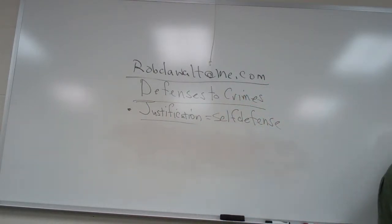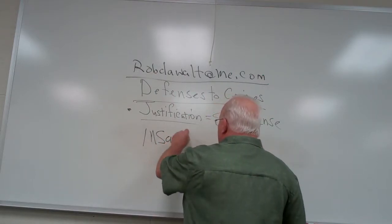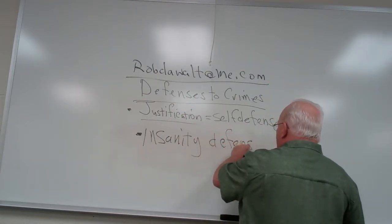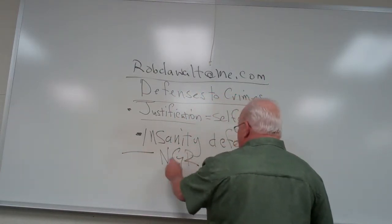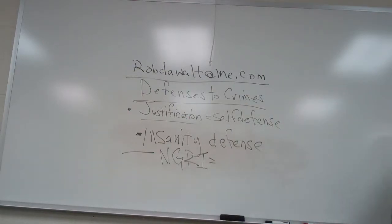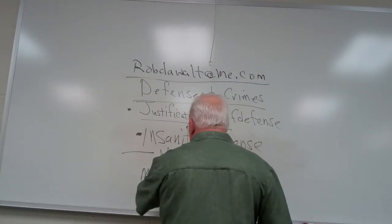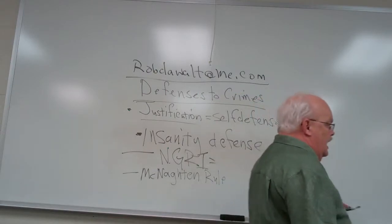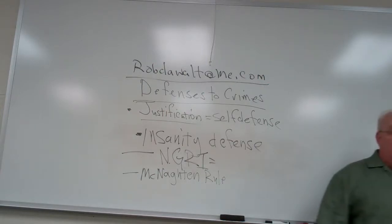Another very controversial defense is the insanity defense. There are two or three different approaches to it. One is what we call NGRI — Not Guilty by Reason of Insanity — which is the primary one that people don't like. There's also what we call the McNaughton Rule, which is the basis for what we call the inability to distinguish right from wrong.